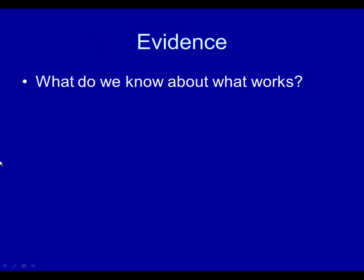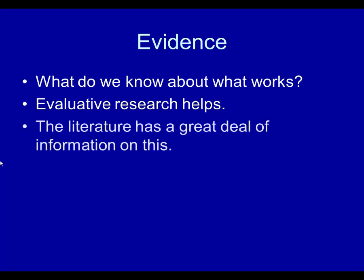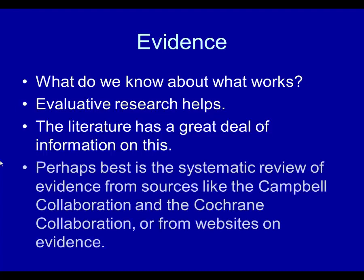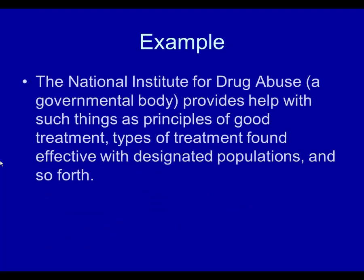Evidence is another component of analysis — what do we know about what works that can guide the decision of what service to offer? Evaluative research and the literature have a great deal of information on that. Perhaps best are systematic reviews from sources like the Campbell Collaboration or the Cochrane Collaboration, or from credible evidence websites such as governmental ones or the American Psychological Association. These are easy to find on the internet. The National Institute of Drug Abuse, for example, provides principles of good treatment and types of treatment found effective with designated populations.